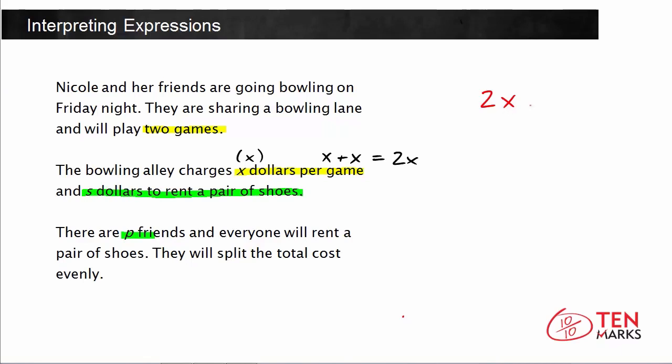Well, there are... This is going to be the cost. 2X is the cost of the games, plus the cost for the shoes for everyone. So S dollars per pair, and everyone needs a pair, so we'll multiply by the number of people that there are. 2X plus SP now represents the total cost for Nicole and her friends going out playing bowling.